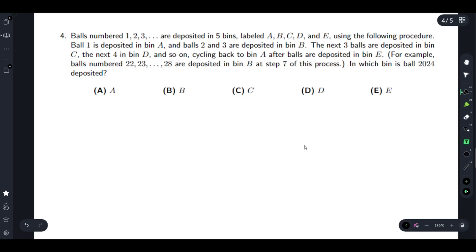Balls numbered 1, 2, 3 are deposited in five bins labeled A, B, C, D, and E using the following procedure: Ball 1 is deposited in bin A, balls 2 and 3 are deposited in bin B, the next 3 balls are deposited in bin C, and the next 4 in bin D, and so on. In which bin is ball 2024 deposited? So we have bins A, B, C, D, and E. Number of balls deposited: we get 1 ball deposited, 2, 3, 4, 5.